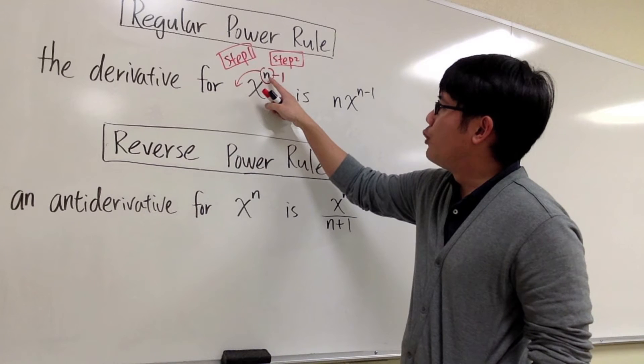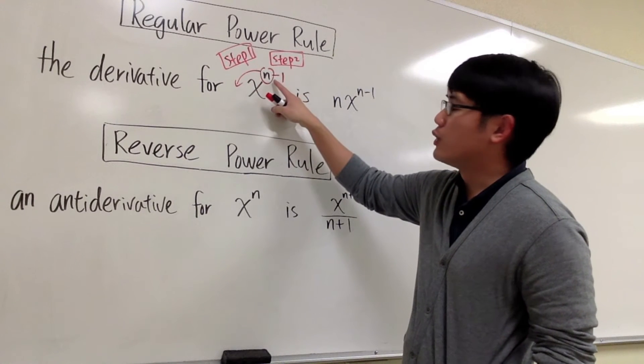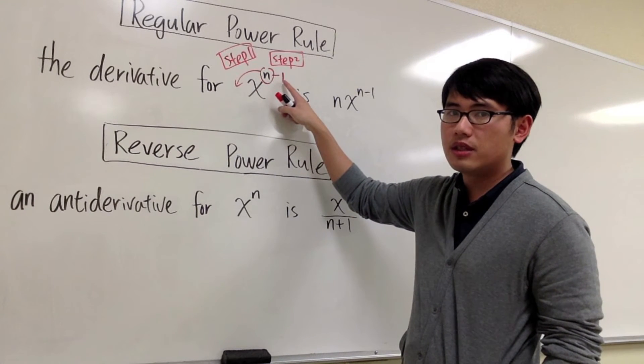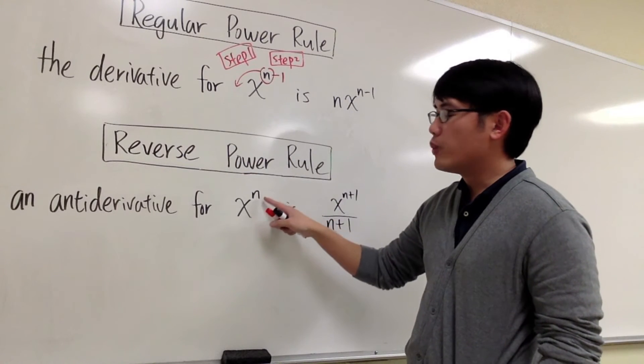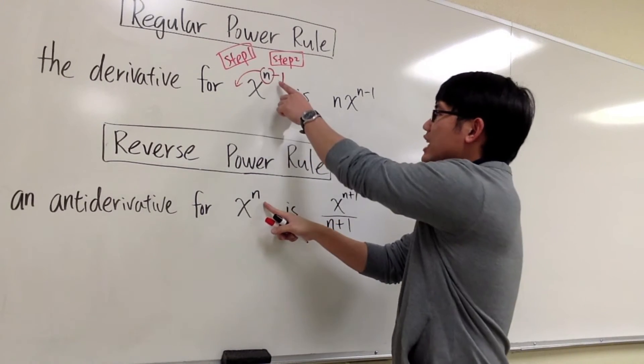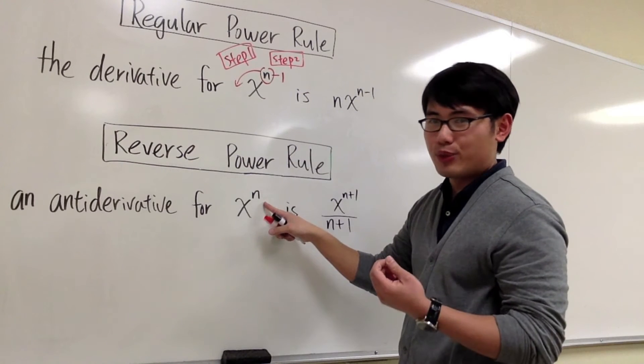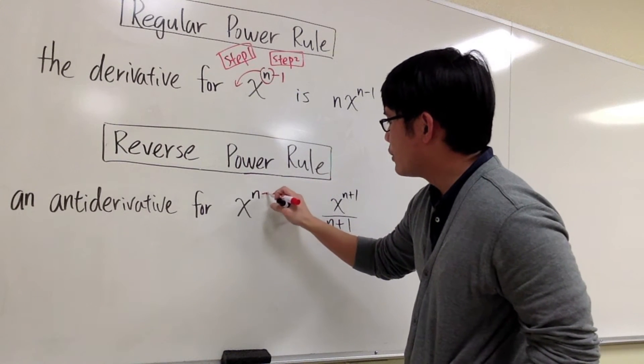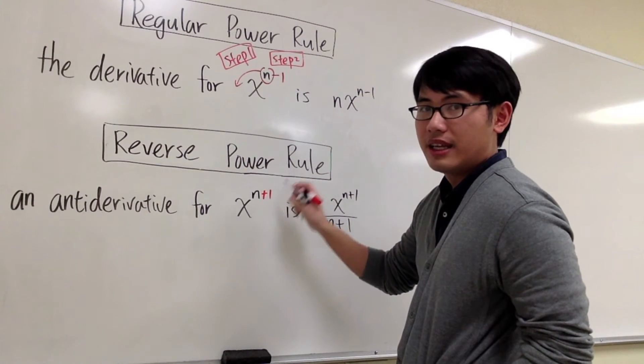Remember, step 1 was we bring the n to the front, and step 2 was we take away 1 from the exponent. For the reverse power rule, we are going to look at the exponent first. Instead of minus 1, we are going to add 1 to it. So we are going to look at n and then add 1 to it. This right here,